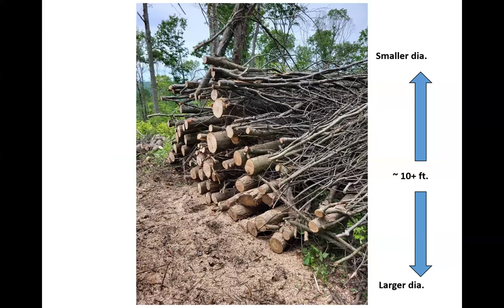This view shows a passageway cut through one of our newer slash walls, illustrating the distribution of material. The wall is about 20 feet wide and 10 feet tall — pictures often don't portray the size and magnitude. Most logs below center are 10 to 12 inches in diameter, with smaller material — down to twos and threes — above that. Large diameter material creates the base; smaller diameter material goes on top.